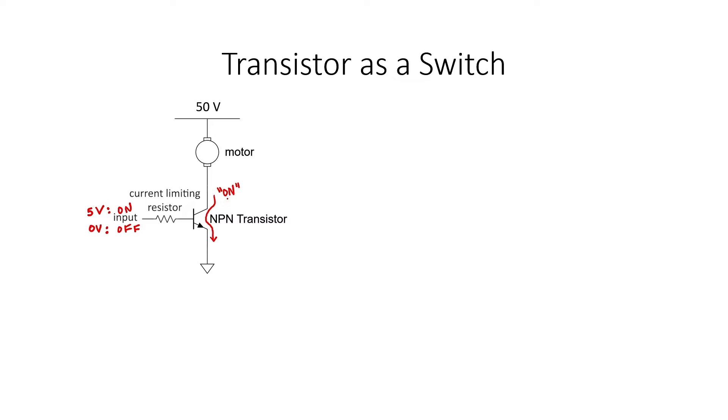The current, though, to drive the motor is passing through the transistor rather than here at the base. This means that while we need to make sure the transistor is sized properly so that it can handle the current going through the motor, we don't necessarily need to have very much current passing through our user control interface or whatever circuitry leads to the input side of that transistor.